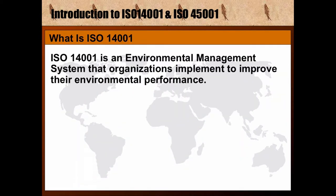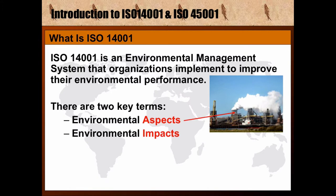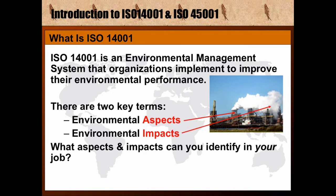ISO 14001 is an environmental management system that organizations implement to improve their environmental performance. There are two key terms: environmental aspects, like the gases released by a power station, and environmental impacts — the hazardous gases as a by-product polluting our air.